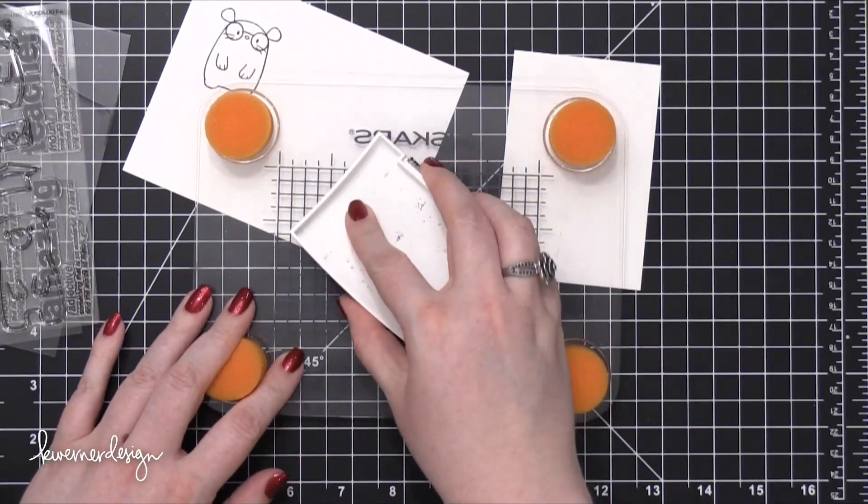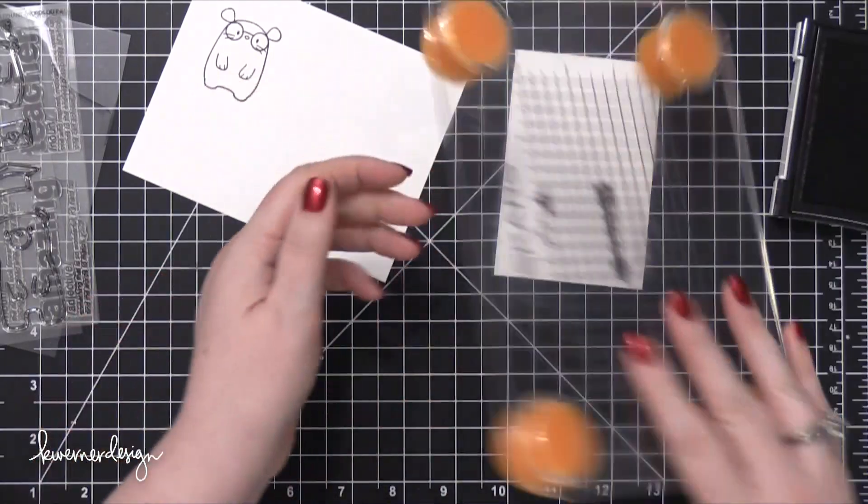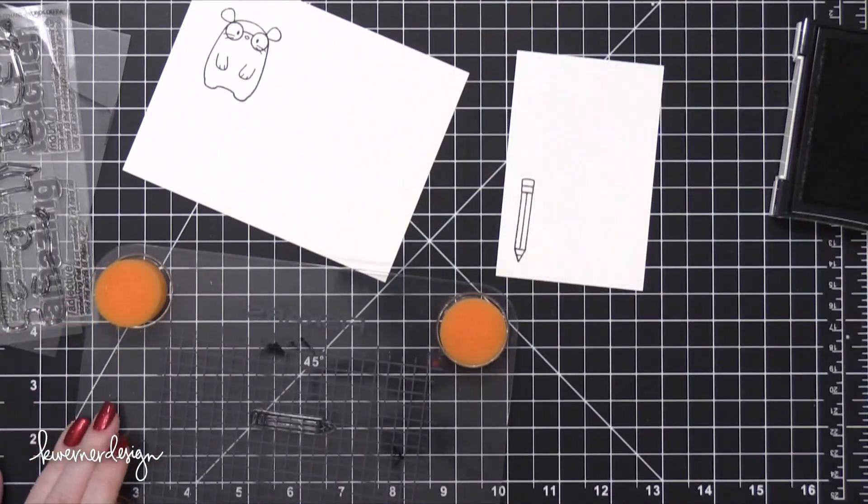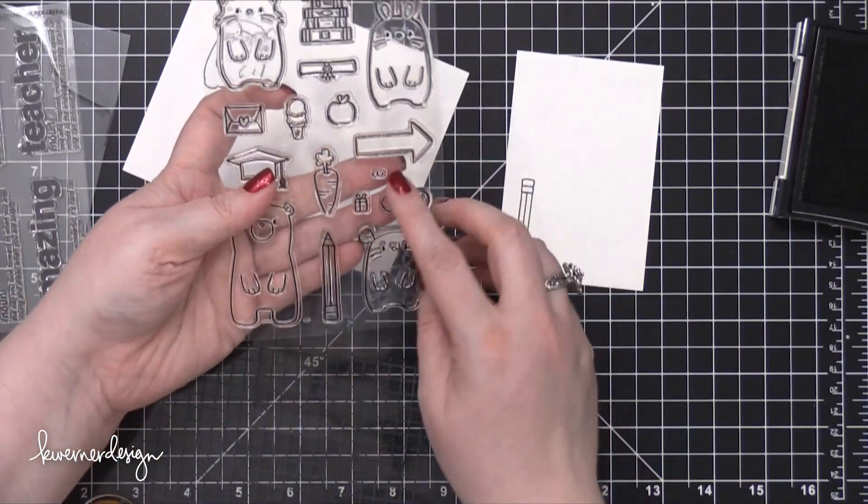I'm using VersaFine Black Onyx ink for the stamping because it is waterproof. It's a pigment ink but it does dry fairly quickly.